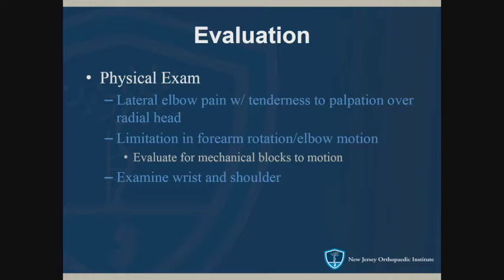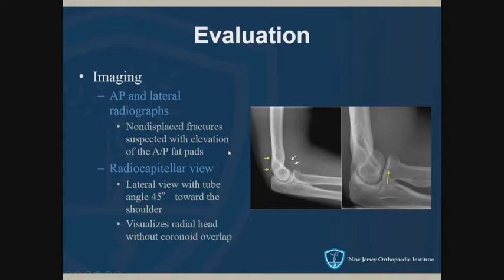Again, examine the wrist and shoulder. On imaging, radiographs can be unclear, but look for a fat pad sign at the front and back of the humerus — you can see effusion on the x-ray. You can also get a radiocapitellar view if you have a high degree of suspicion, which is a lateral view angled at 45 degrees cephalad. That uncouples the radial head and the coronoid so you can see more of the radial head without overlap — and the fracture that wasn't visible before becomes visible.